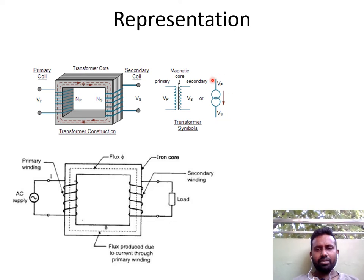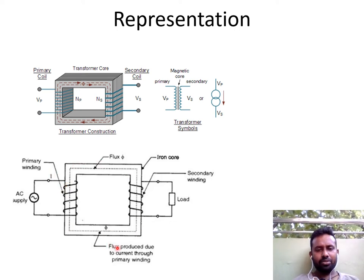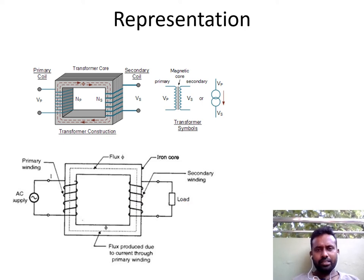You can also represent it like this. AC supply is given to this transformer — this is the primary winding. Flux will be circulating in the core, produced due to current through the primary winding. This is the iron core, and these are the secondary windings, and this is the load. So this is generally a representation of a transformer.